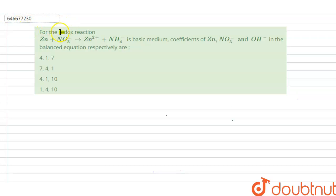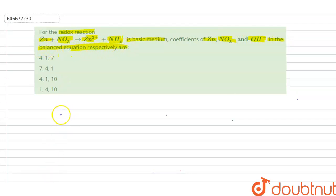The question says that for a redox reaction: Zn + NO3⁻ gives Zn²⁺ + NH4⁺ in basic medium. We need to find the coefficients of Zn, NO3⁻, and OH⁻ in the balanced equation respectively. First of all, we will write the reaction: Zn + NO3⁻ → Zn²⁺ + NH4⁺.